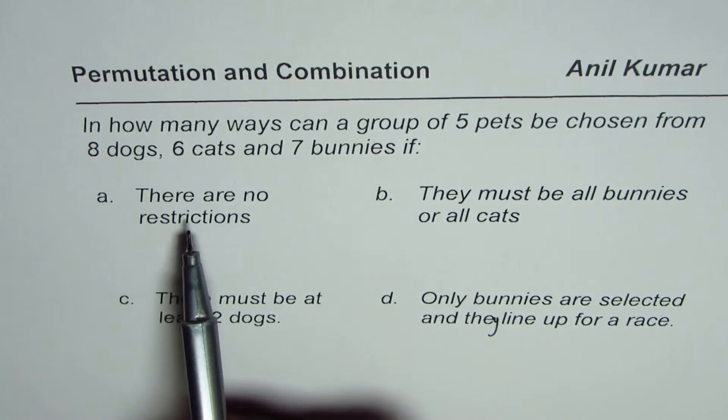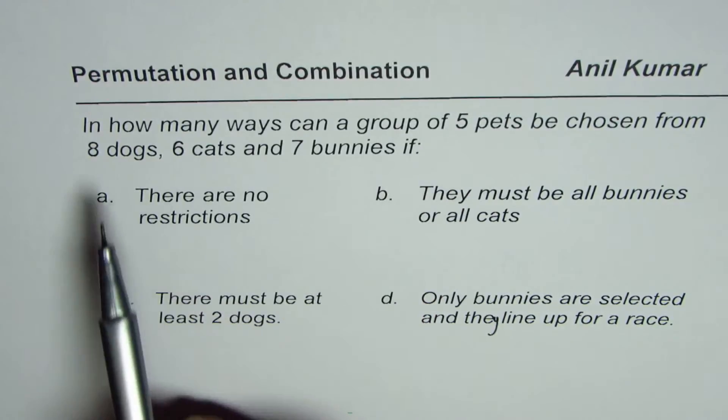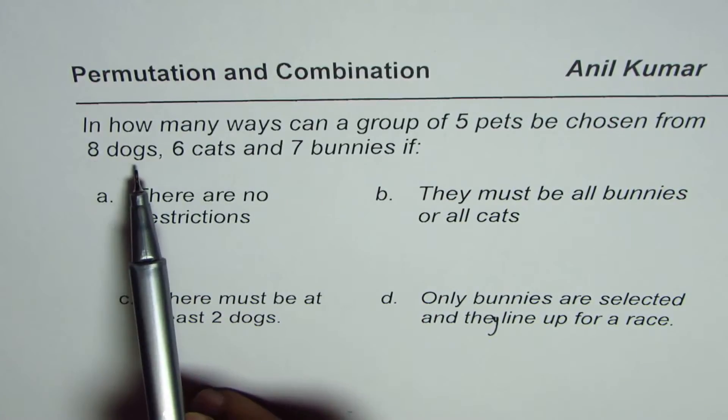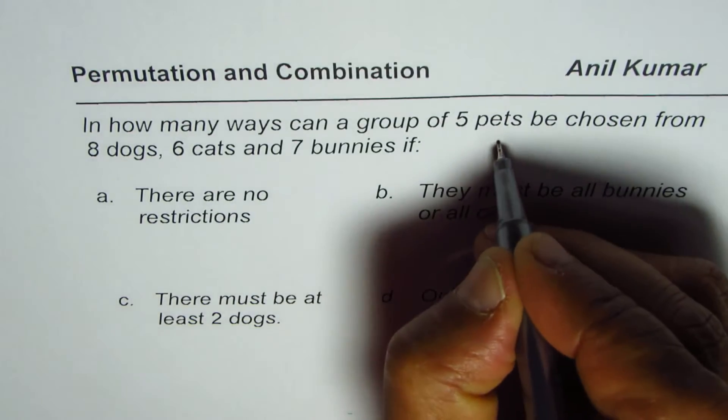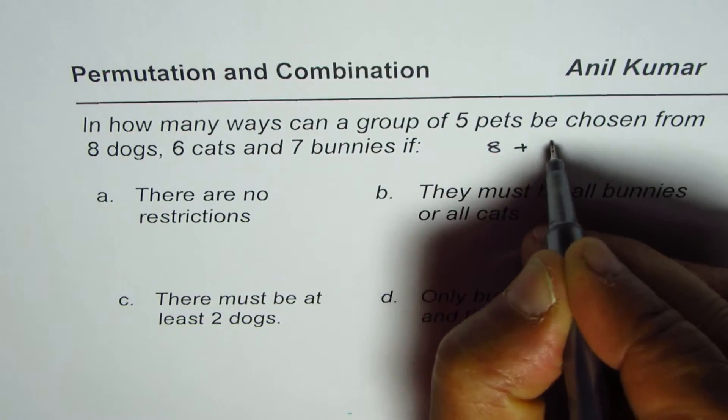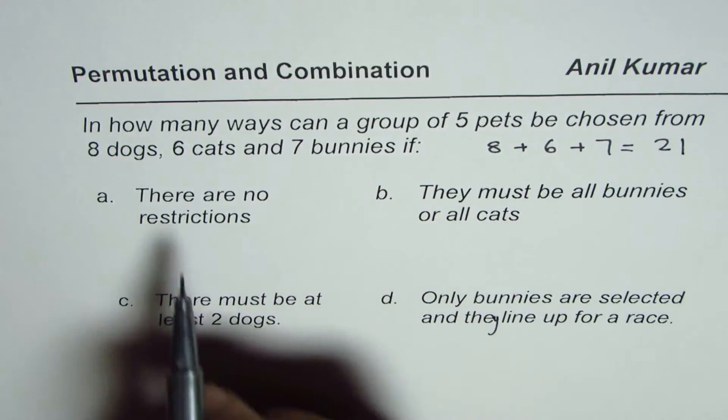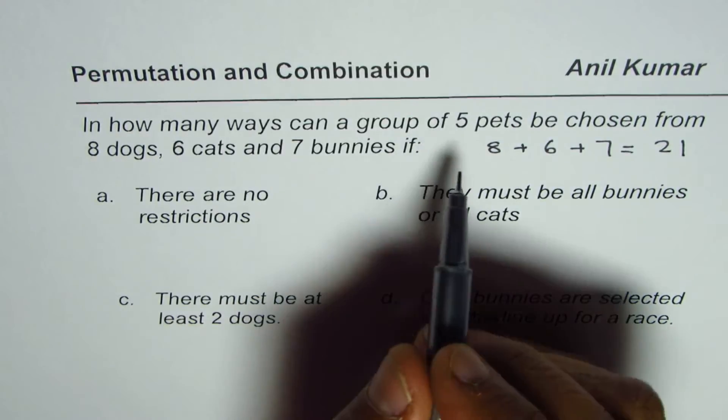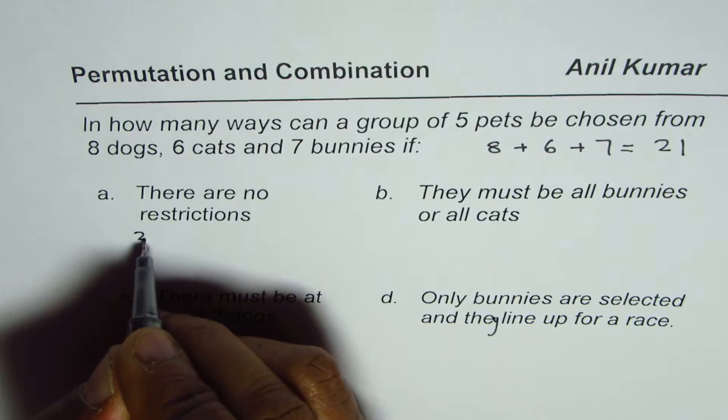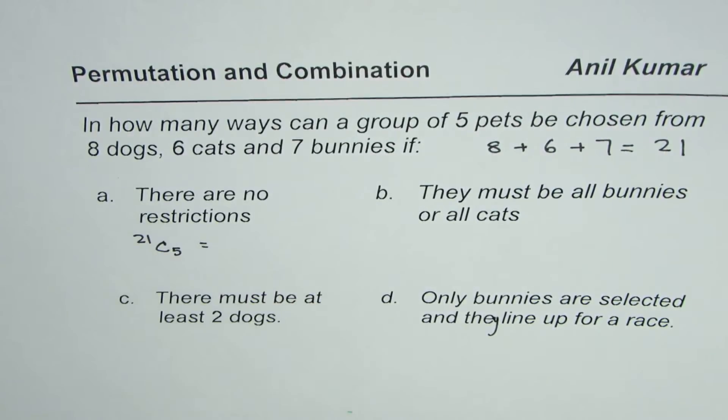Let's begin with the very first one. There are no restrictions for selecting 5 pets from 8 dogs, 6 cats, and 7 bunnies. So let's add them up. 8 dogs, 6 cats, and 7 bunnies total is 21. There are no restrictions. We need to select 5, and therefore the answer will be 21C5. So that is how you could answer part 1.